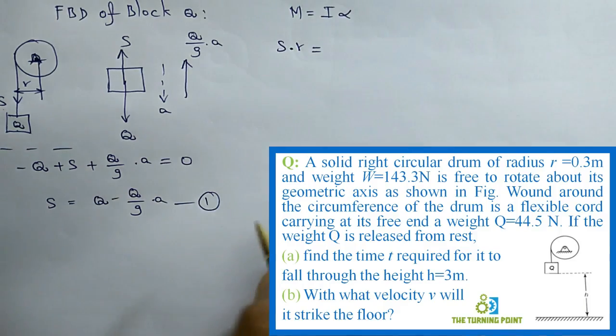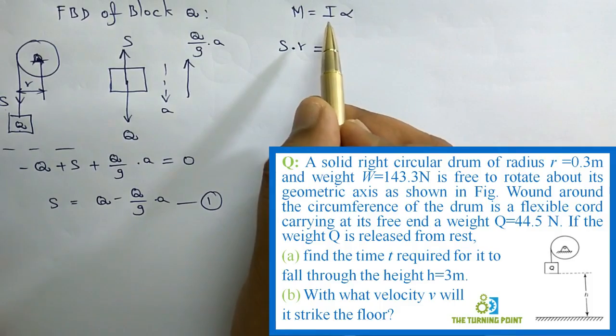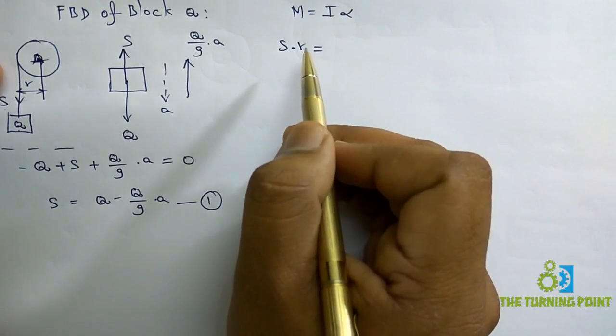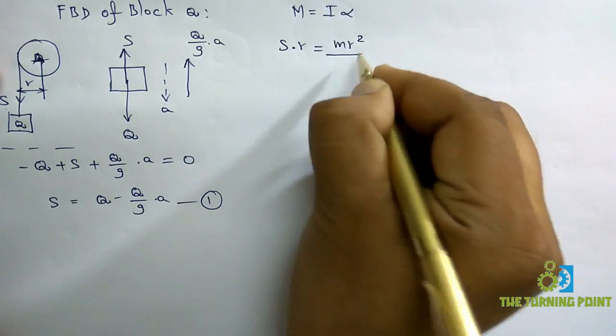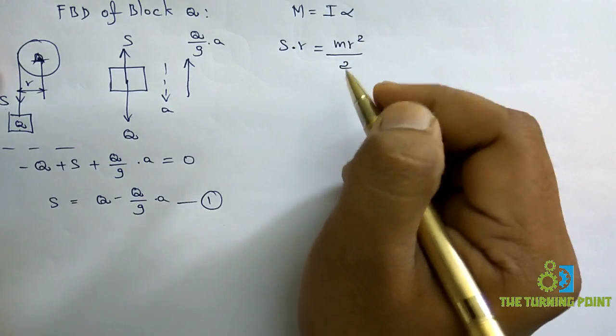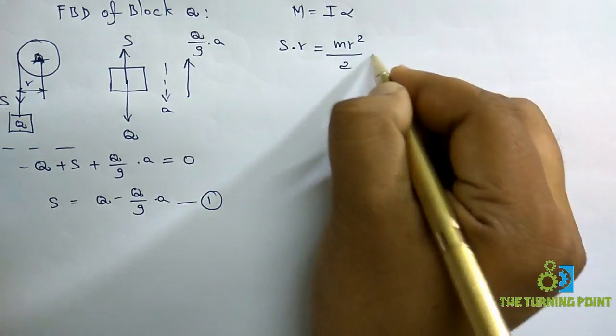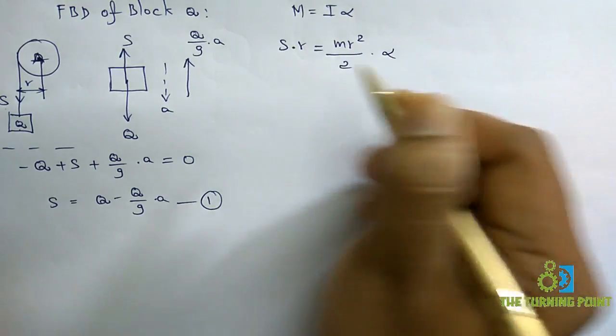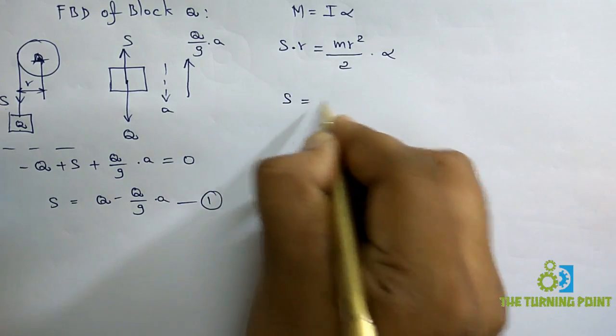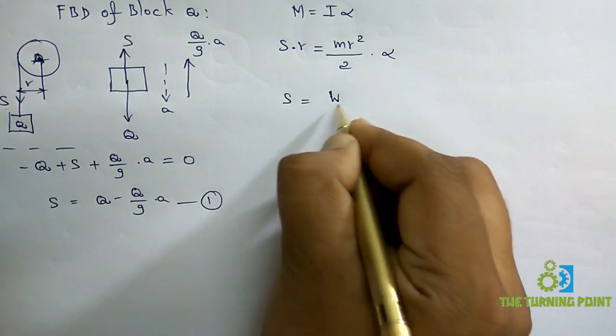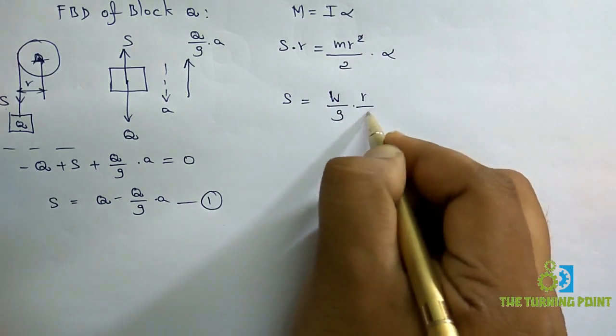S into R is the moment, which equals I times alpha. Mass moment of inertia is MR²/2. You need to remember this relation: MR²/2 into alpha. So here R gets cancelled. S equals, instead of M I can write W/G, so one R gets cancelled, leaving R/2.